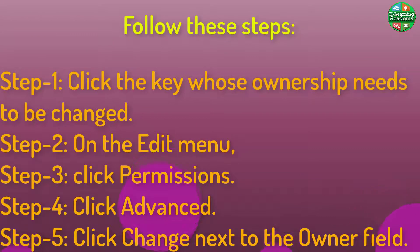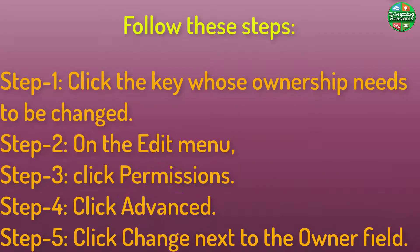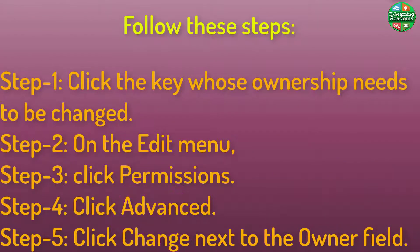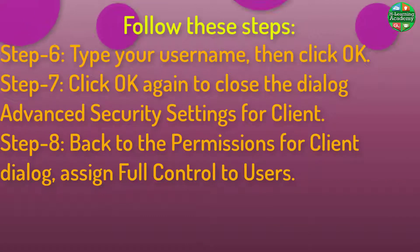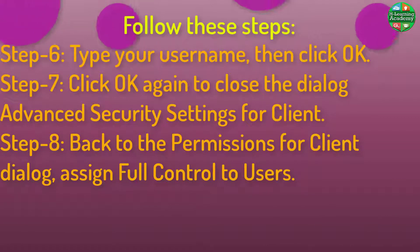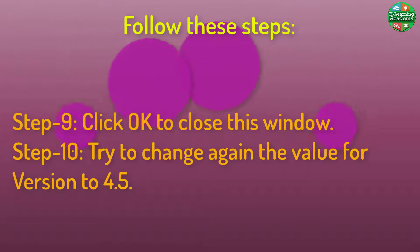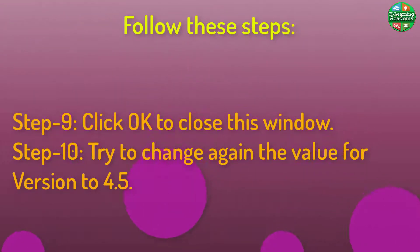Step 1: Click the key whose ownership needs to be changed. Step 2: On the Edit menu. Step 3: Click Permissions. Step 4: Click Advanced. Step 5: Click Change next to the Owner field. Step 6: Type your username, then click OK. Step 7: Click OK again to close the Advanced Security Settings for Client dialog. Step 8: Back in the Permissions for Client dialog, assign full control to users. Step 9: Click OK to close this window. Step 10: Try to change the value for Version to 4.5 again.